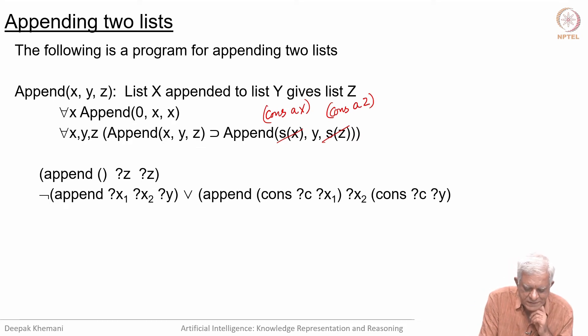Here I have written it correctly. Instead of A, I have used a constant C here, or it can be anything. It does not have to be a constant. It can be a list or something. In the clause form, I have written the correct definition. In the logic form, I made a mistake.